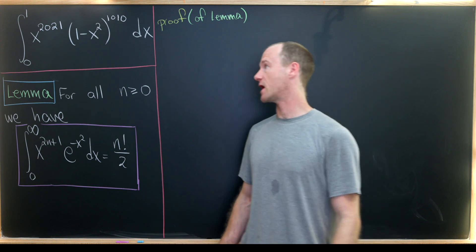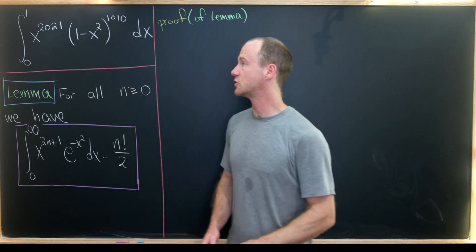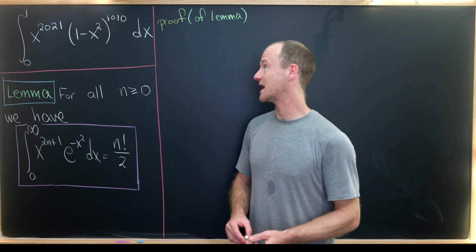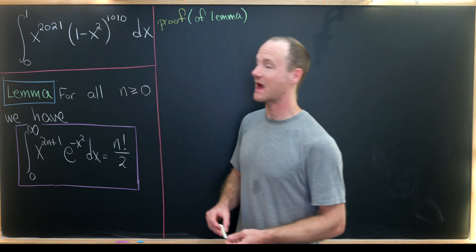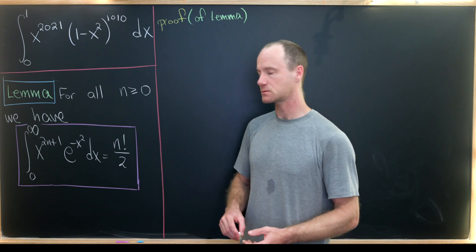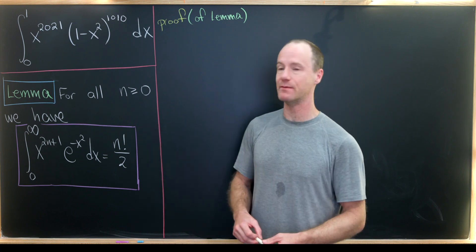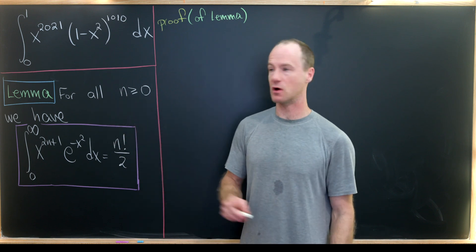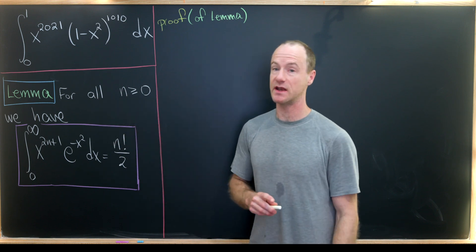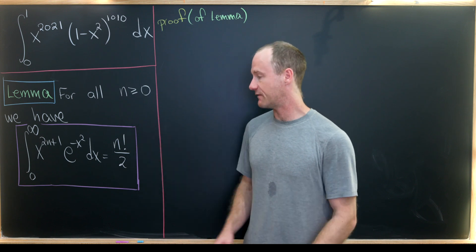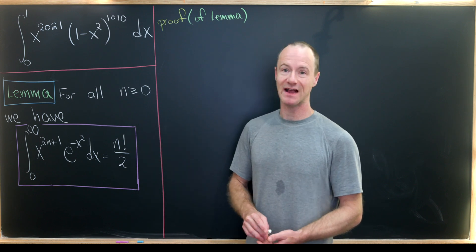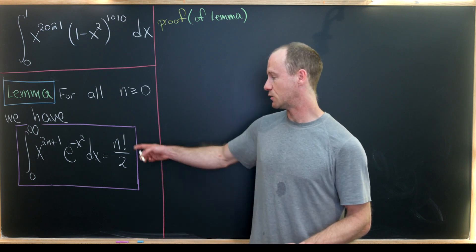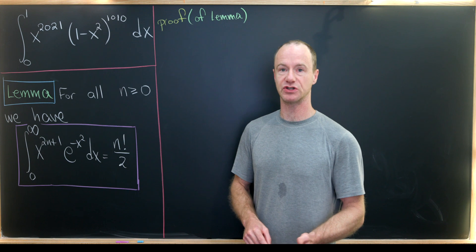So let's see what we've got. We have the integral from zero to one of x to the 2021 times one minus x squared to the 1010. And we're going to use the following lemma along the way: for all n greater than or equal to zero, where n is a non-negative integer, the integral from zero to infinity of x to the 2n plus one times e to the minus x squared dx equals n factorial over two.